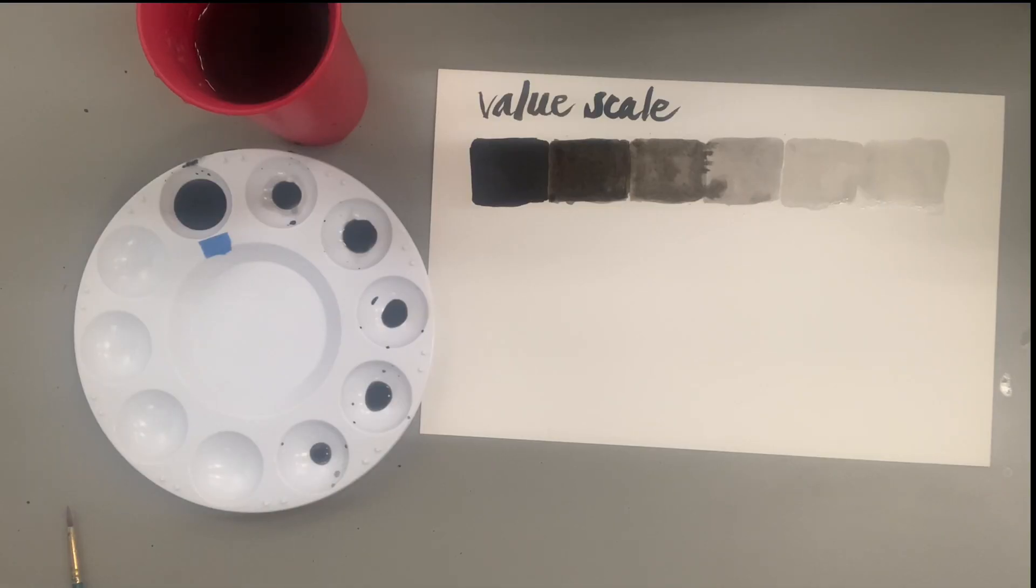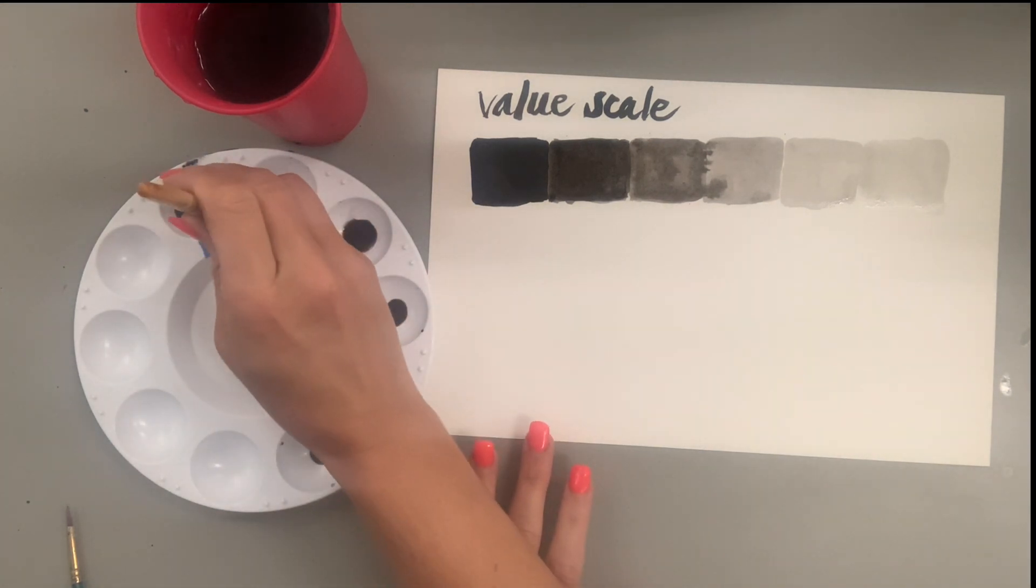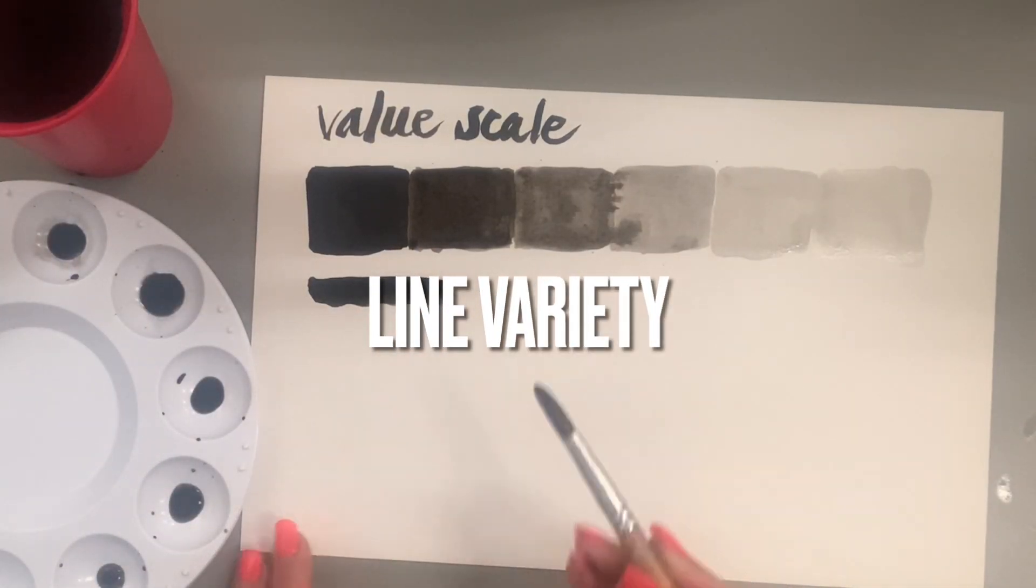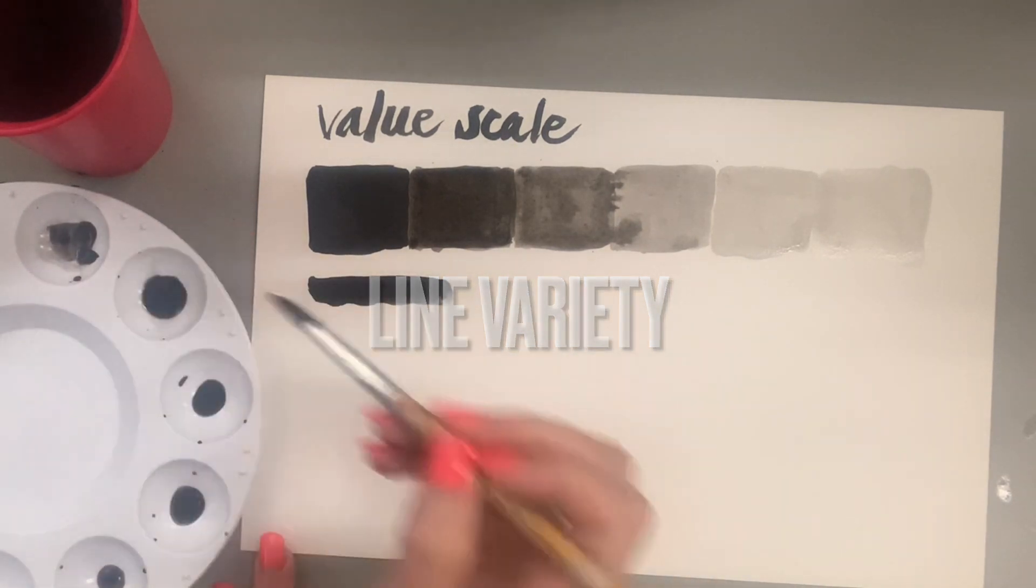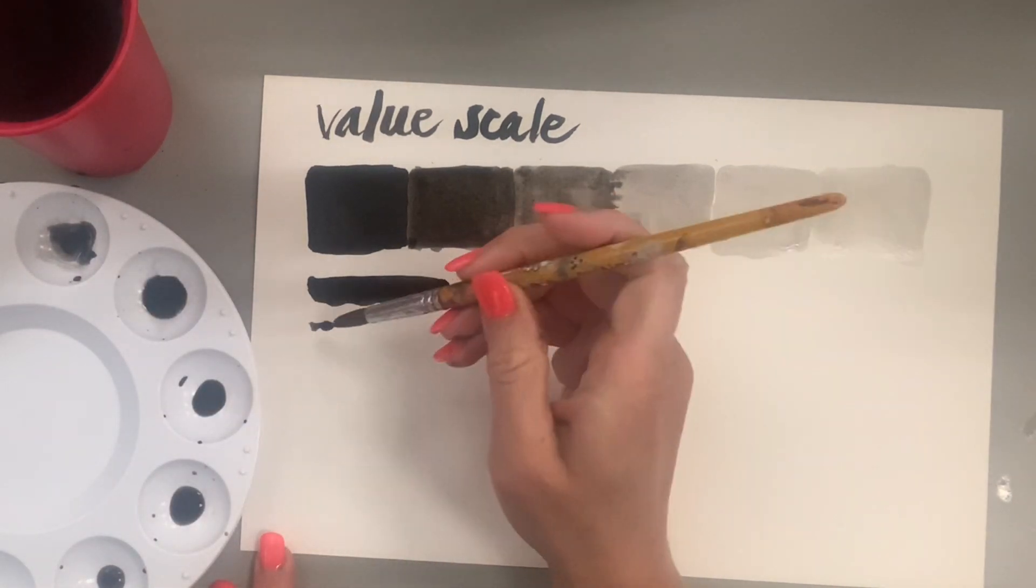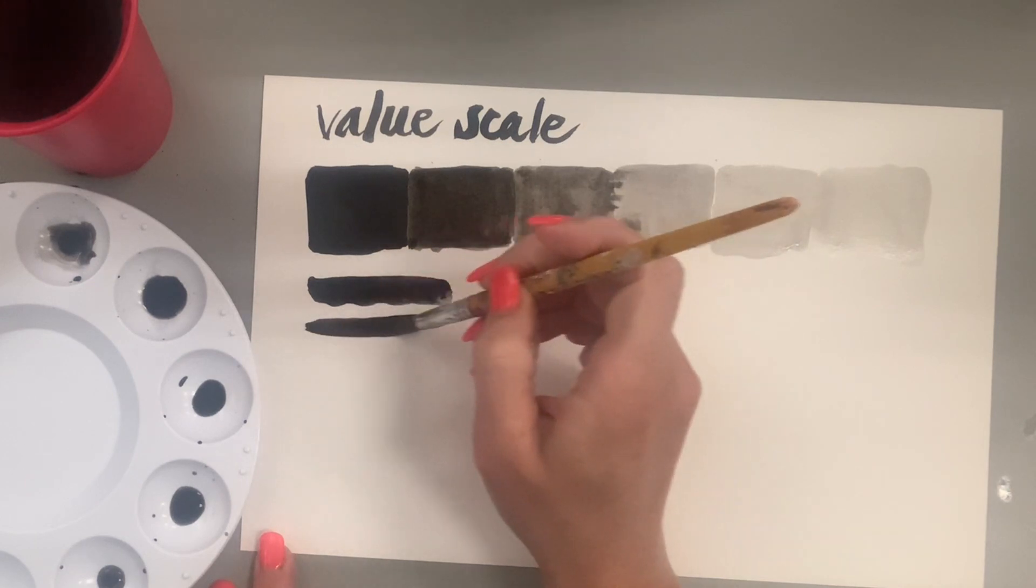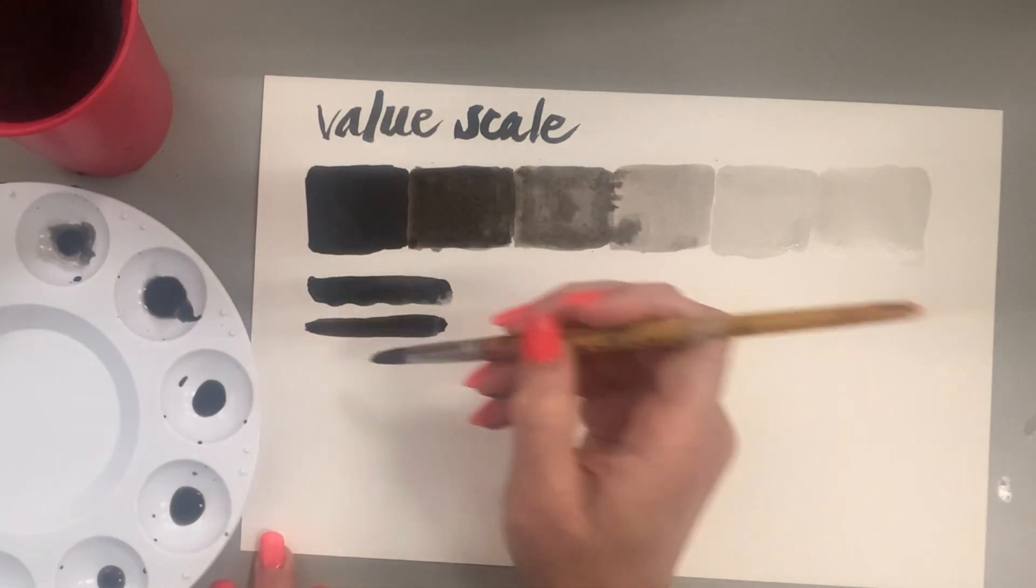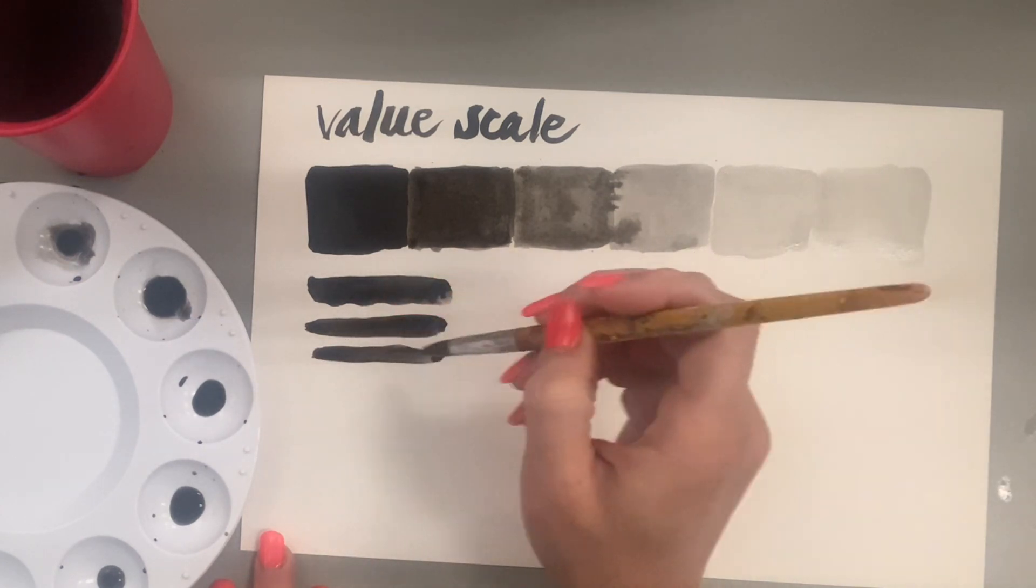Now that I feel comfortable with my value scale, I'm going to play around with line variety using a paintbrush. My line variety is going to focus on thick to thin lines, and I'm going to kind of dip in each of the little values that I created, so I'm progressing from my thickest line to thin, also going from dark to light just to see what that looks like. I am just using a random round brush that I found in my classroom.